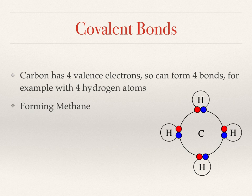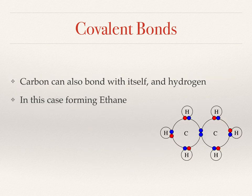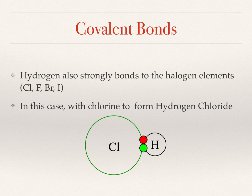Covalent bonds crop up everywhere. All of carbon chemistry, which underpins conservation and life and just about everything, is based on covalent bonding. Carbon's four valence electrons allow it to form up to four bonds - in this case forming methane by bonding with four hydrogen atoms. Carbon is also very happy to bond with itself, for example forming ethane with carbon and hydrogen, where we form a carbon-to-carbon bond, which is basically what makes life possible. Covalent bonds also happen with other elements that are happy to share electrons, for example between chlorine and hydrogen to make hydrogen chloride, which you may know as hydrochloric acid.